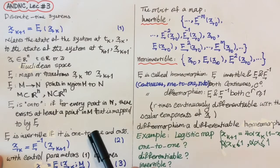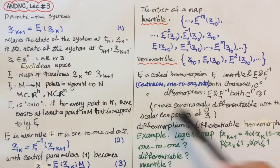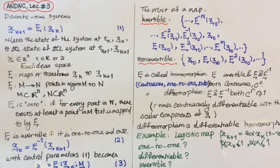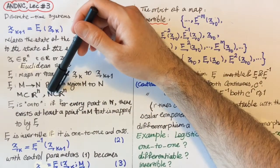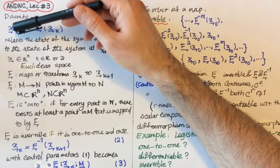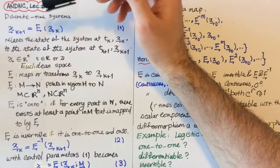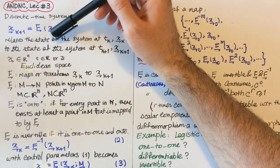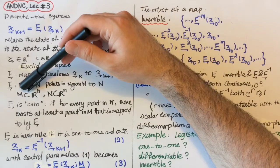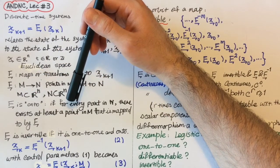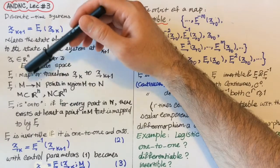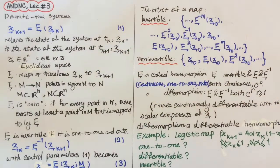Regardless of that, F has a few important properties. One is F is onto, meaning that for every point in N, there exists at least one point in M which is projected to that point in N by F. There should at least exist one point, and then it's called onto.